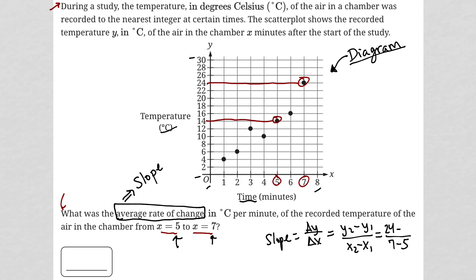So I'd have 24 minus 14 as my numerator. Well, 24 minus 14, let's go up for space. 24 minus 14 is 10. Seven minus five is two. Ten divided by two is five. And therefore, the average rate of change is five. And that is our answer.